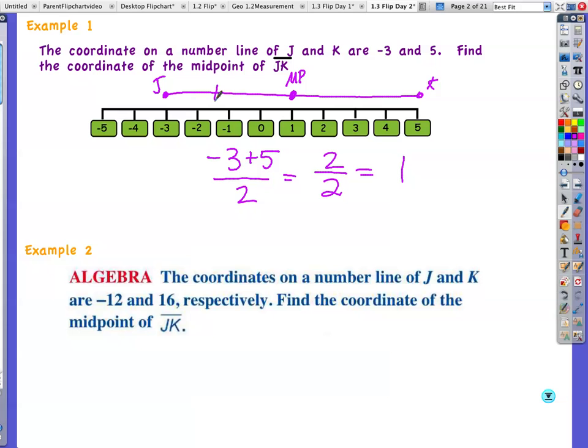Which means our segments are congruent. Notice those congruency markings. And if you want to double check, from 1 to 5, it's 4 units. From -3 to 1, it's also 4 units. It's also showing that those are congruent.